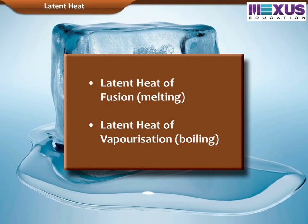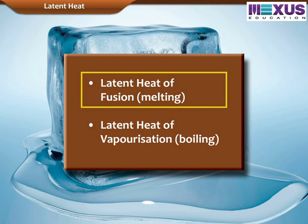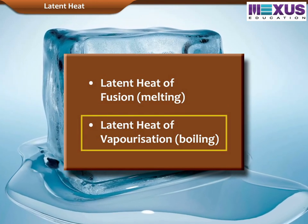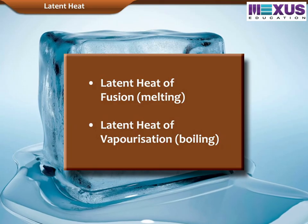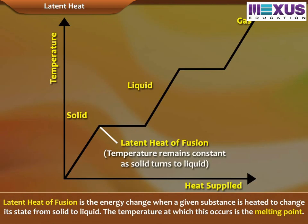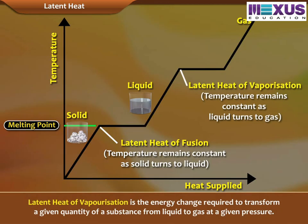Two of the more familiar forms of latent heat are latent heat of fusion and latent heat of vaporization. Latent heat of fusion is the energy change when a given substance is heated to change its state from solid to liquid — the temperature at which this occurs is the melting point. Latent heat of vaporization is the energy change required to transform a given quantity of a substance from liquid to gas at a given pressure.